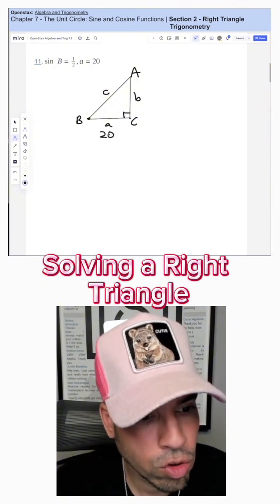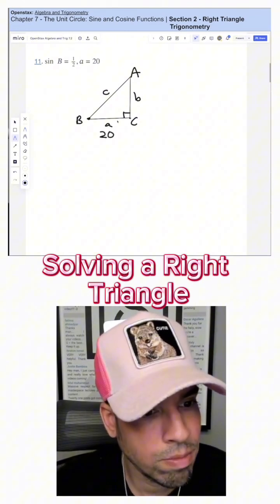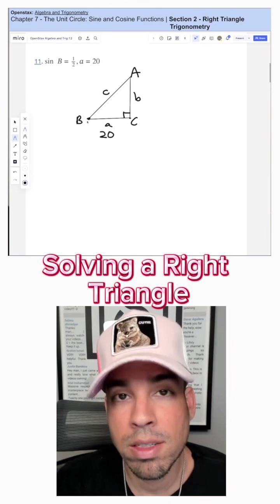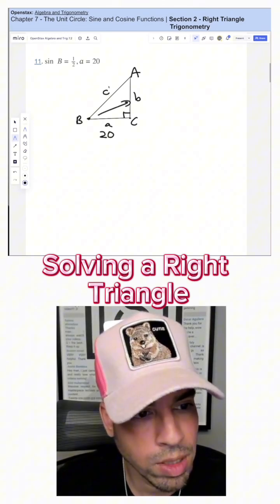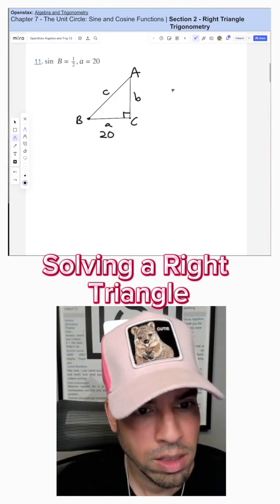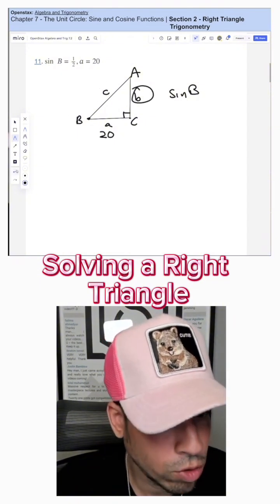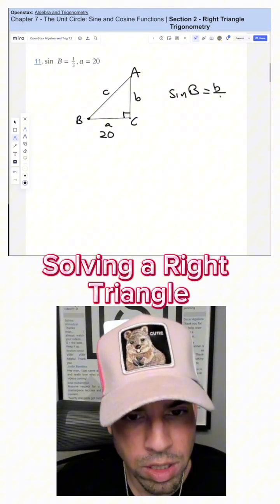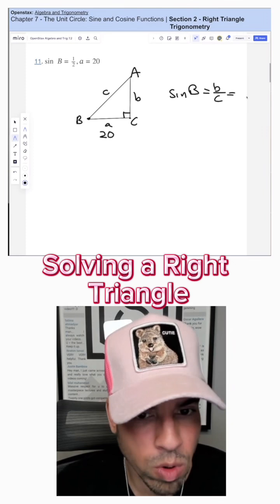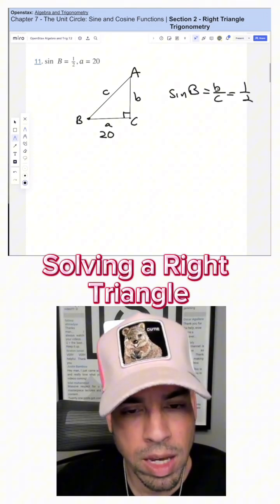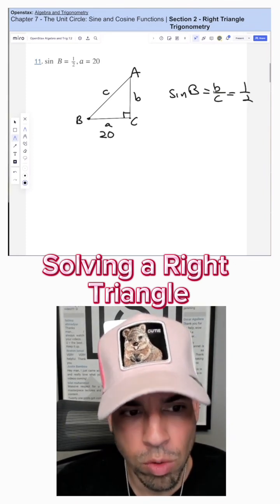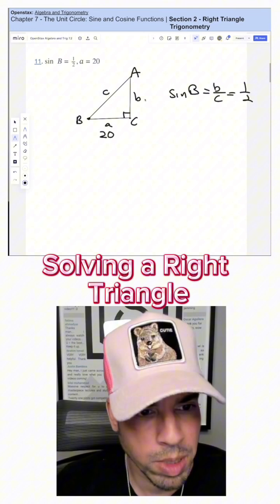Now we know that A is 20, and we know that sine of B is 1/2. So what is sine of B? Sine of B is opposite over hypotenuse. So since sine of B is opposite over hypotenuse, which is B over C, we also know that this equals 1/2. So I basically know that B over C equals 1 over 2, which means that there's a relationship between B and C.